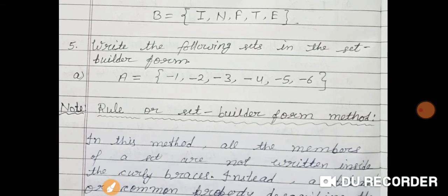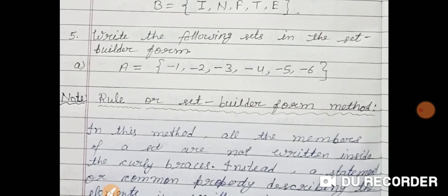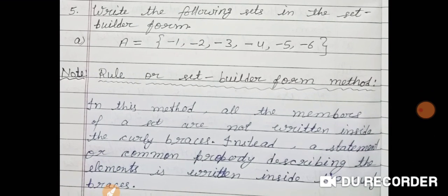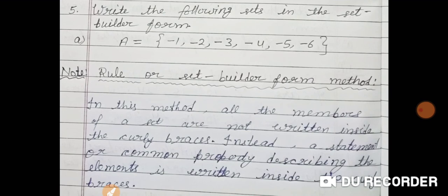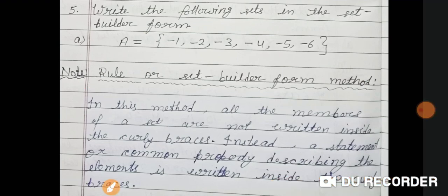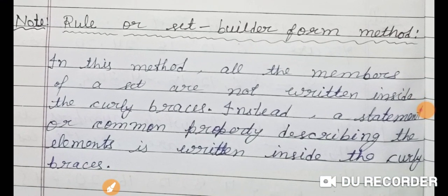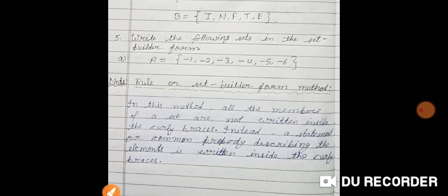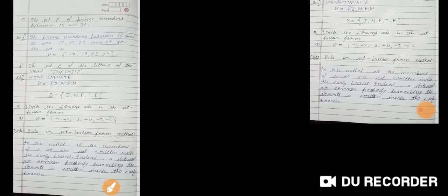Question 5: write the following sets in set builder form. In this method, all members of the set are not written inside the curly brackets. Instead, a statement or common property describing the elements is written inside the curly brackets. We use a suitable common word to describe all the given elements.